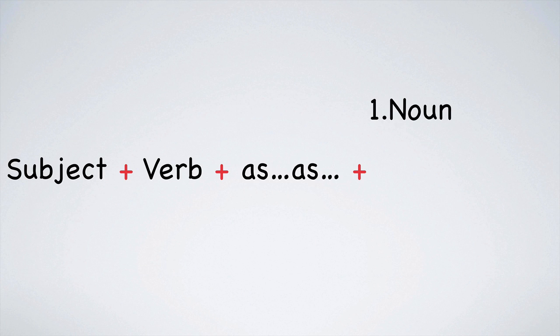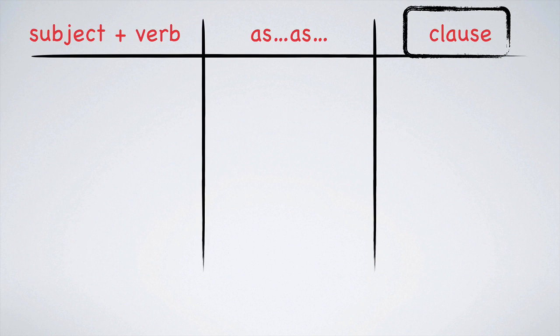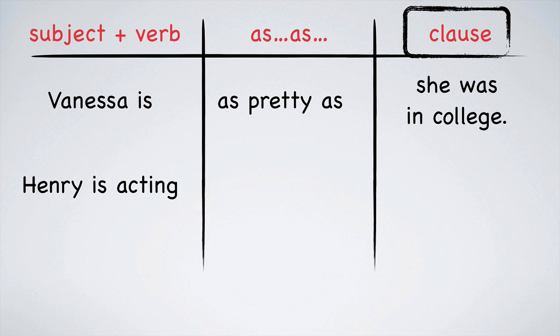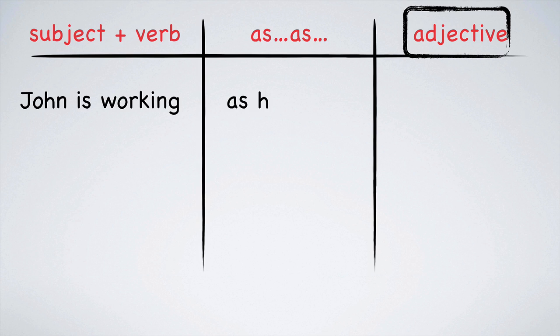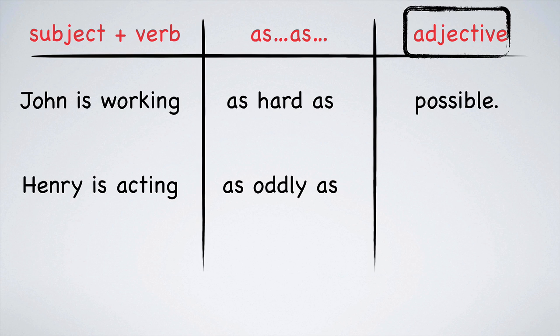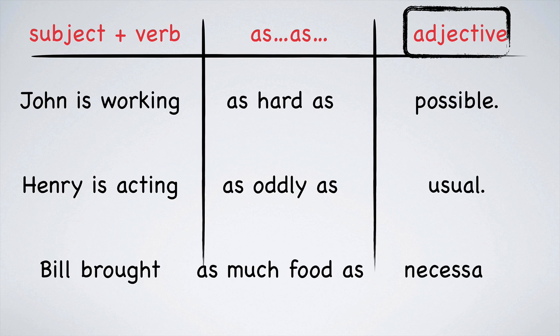Throughout this video I've been using noun phrases after the second as. There are other patterns that you can use. It is also possible to use a clause, an adjective, or an adverb. First I'd like to show you some examples with a clause. Remember, a clause is a group of words with at least a subject and a verb. Vanessa is as pretty as she was in college. Henry is acting as crazily as he always does. Bill has as much money as Hillary. And now for the adjectives: John is working as hard as possible. Henry is acting as oddly as usual. Bill brought as much food as necessary.